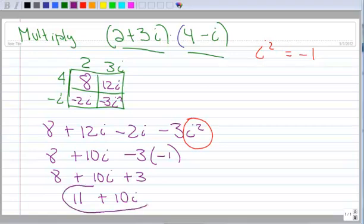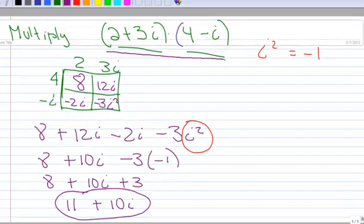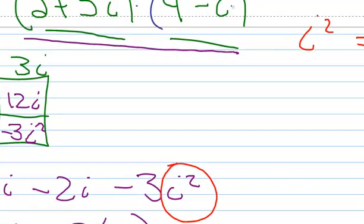And that is the result, or the product, of multiplying these two complex numbers together. So that's the end of this video.